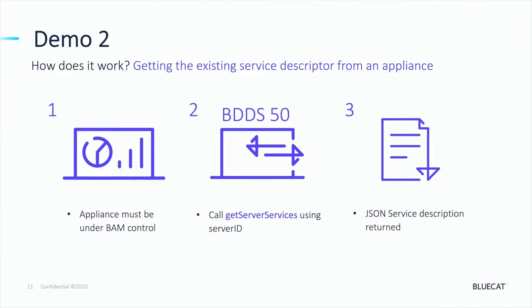In Demo 2 we're going to look at getting the existing JSON service descriptor from an existing appliance. The appliance itself must already be under BAM control, and we're going to use our BDDS50 appliance in the lab for this. We're going to be making GET calls in Postman to the Get Server Services API using the object ID for our existing appliance and we'll take a look at the JSON service descriptor that's returned.